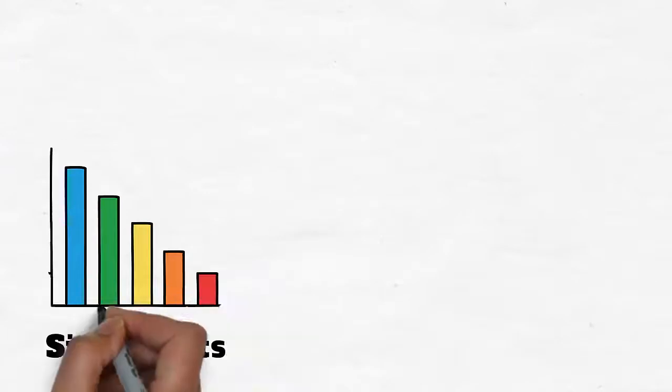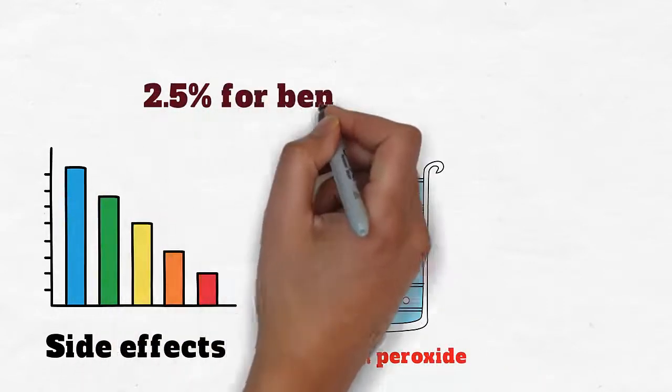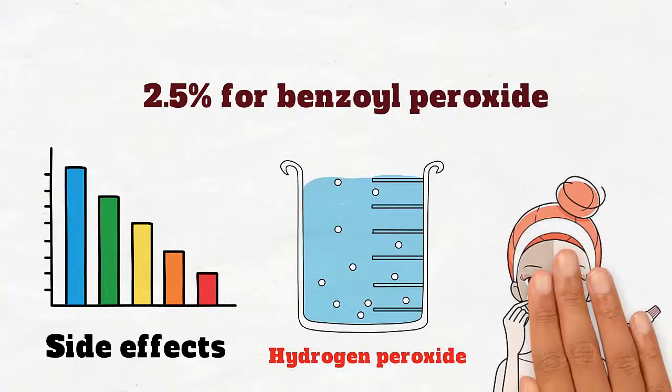These side effects can be reduced by further diluting the peroxide for hydrogen peroxide, by using a medication containing the least strength of the peroxide, 2.5% for benzoyl peroxide, and by following their application with moisturizers.